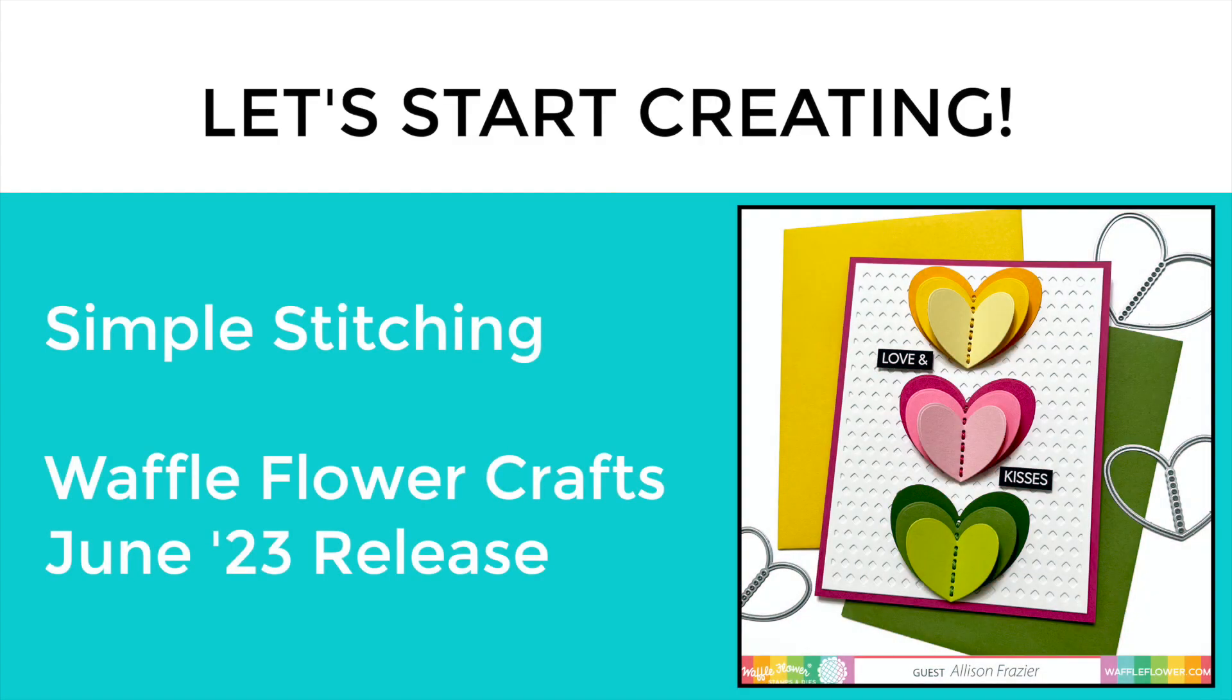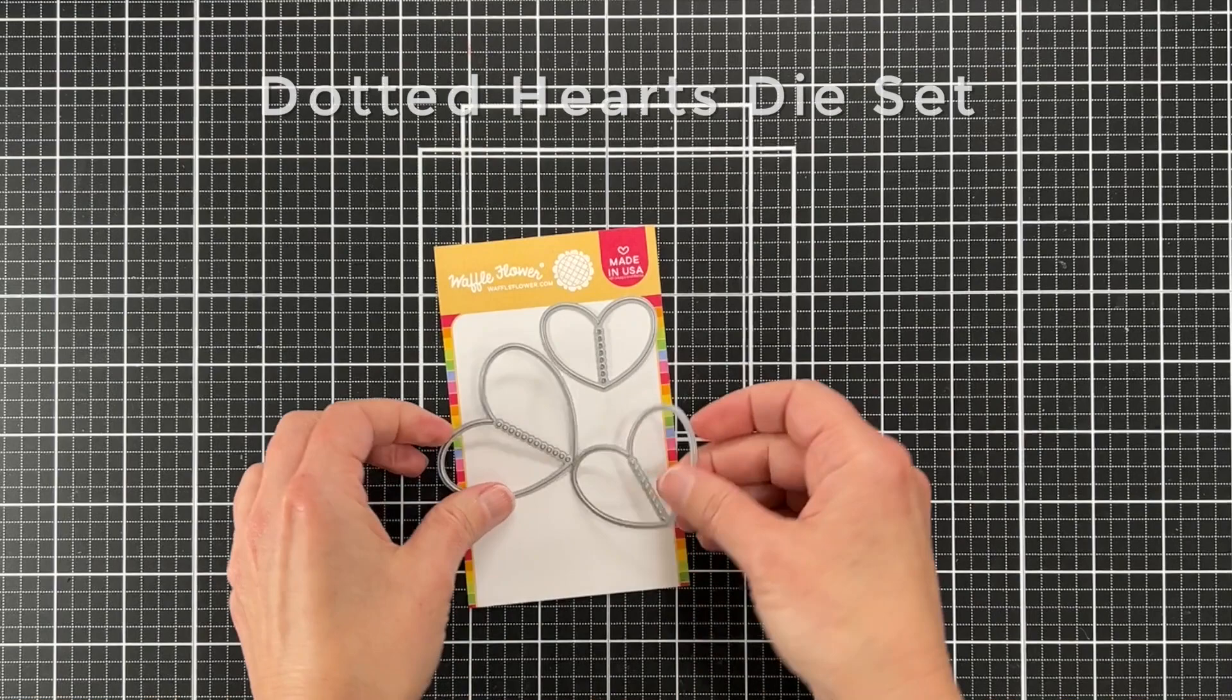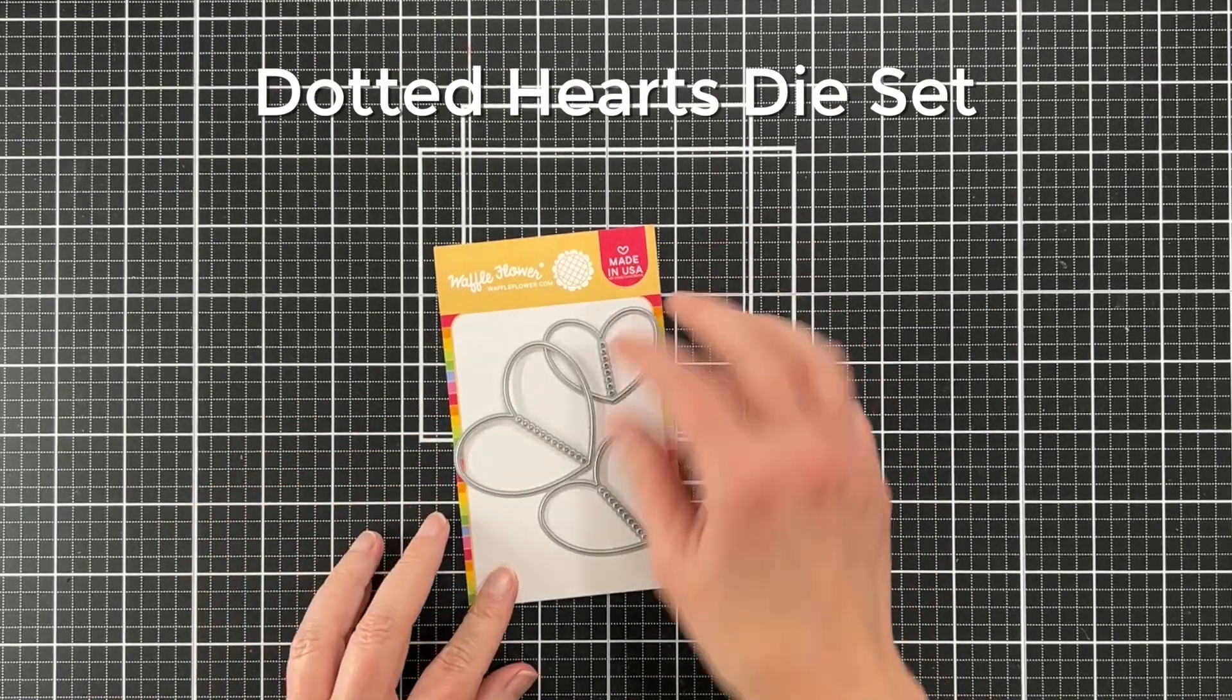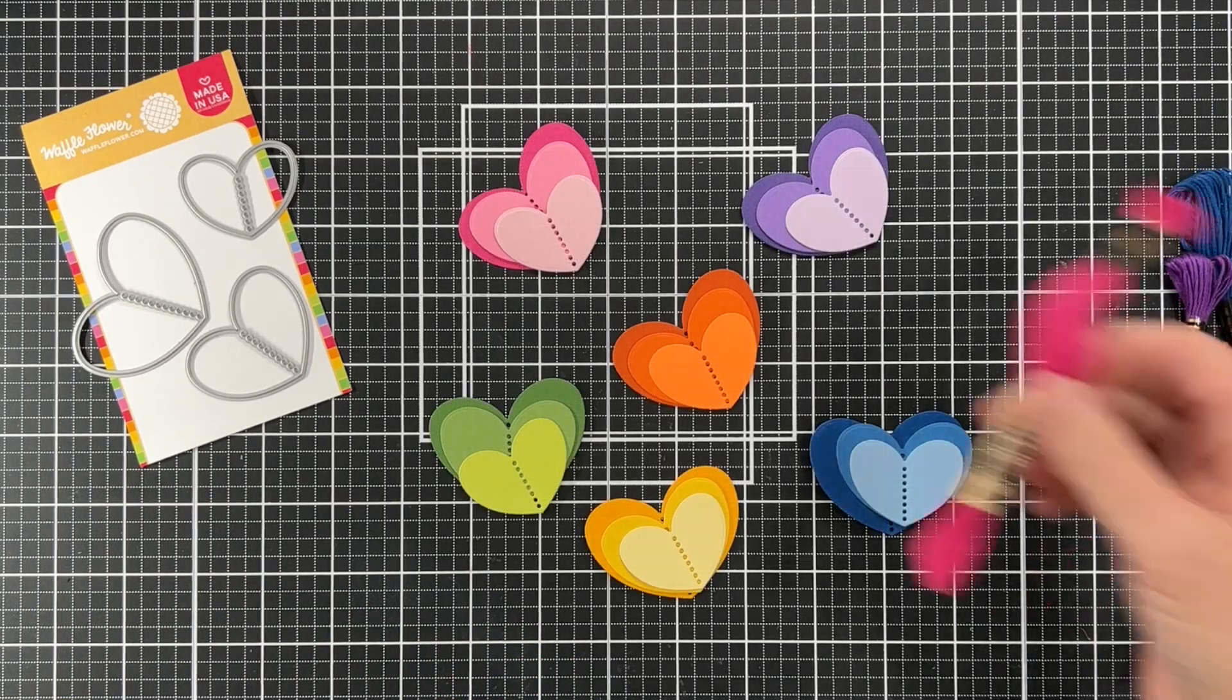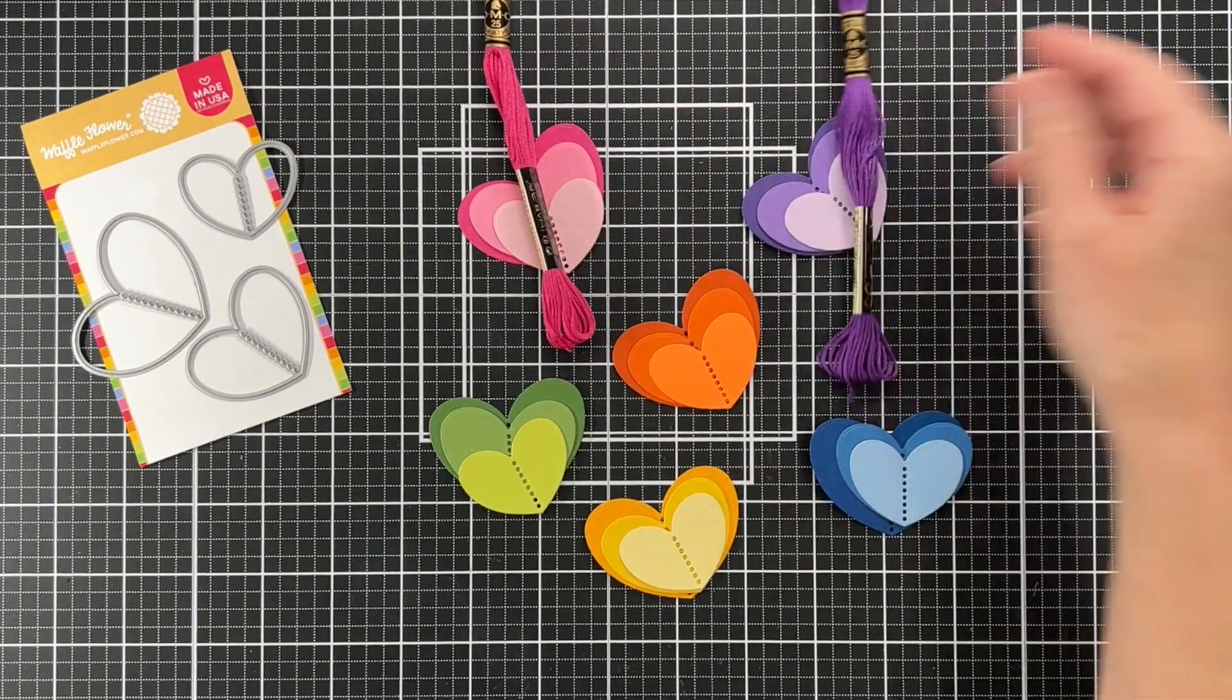Hey everyone, welcome back to another video. Today we're going to be making this sweet card using a couple new dies from Waffle Flower Crafts. We're going to be using the dotted hearts die set from the June release. There are three hearts with little dots in the middle and you can see I've cut them from colors of the rainbow.